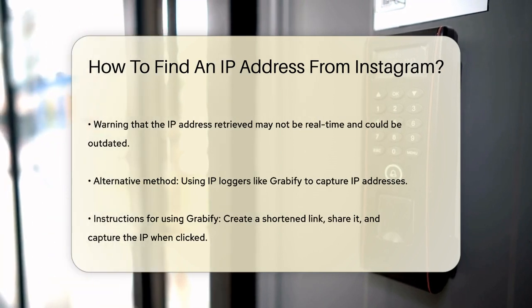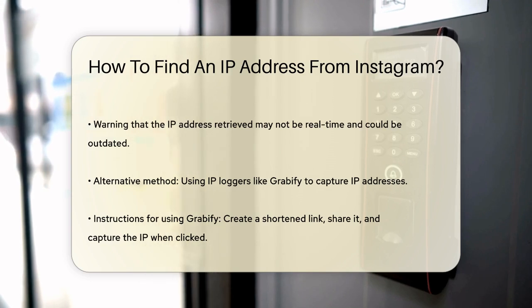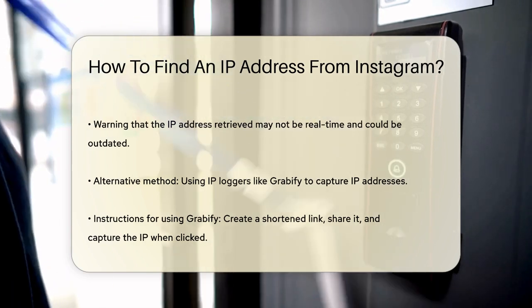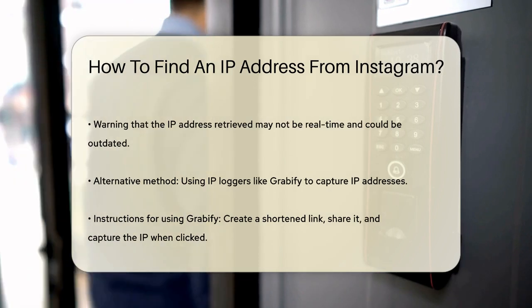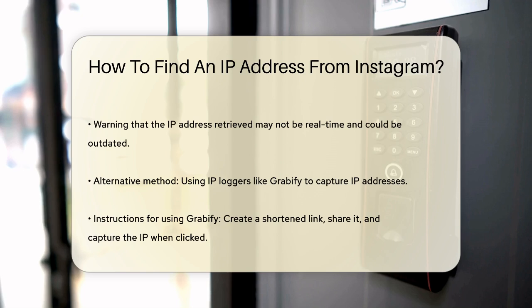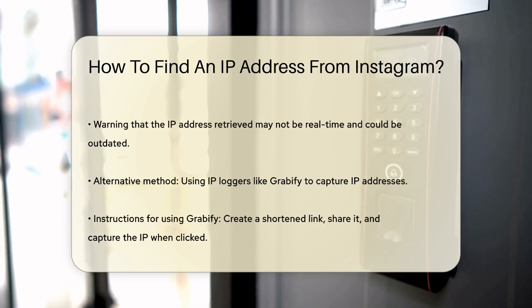Another method is using IP loggers like Grabify. Here, you create a shortened link using Grabify, which you then share with the person you want to track. When they click on this link, Grabify captures their IP address and provides you with detailed information, including their geographic location, time zone, and even their operating system.